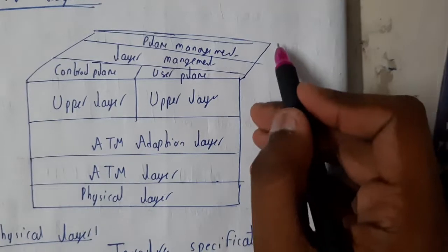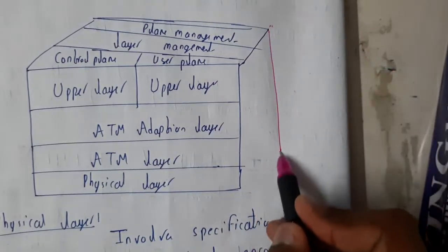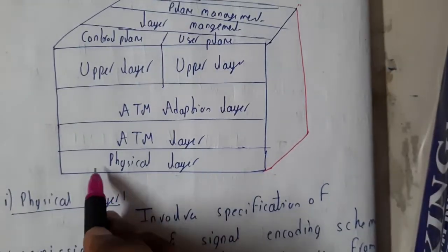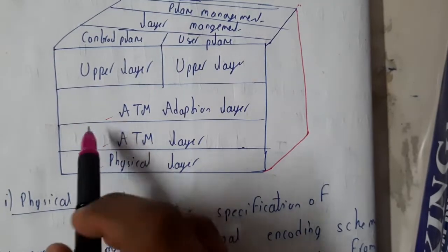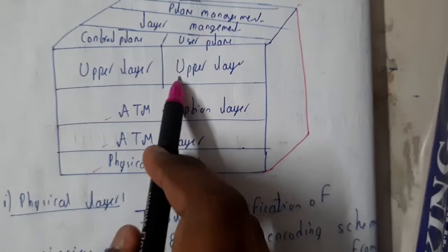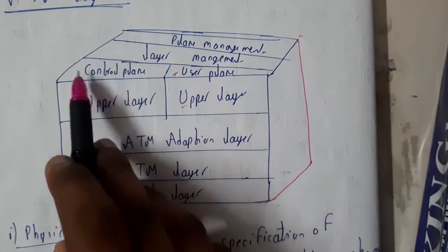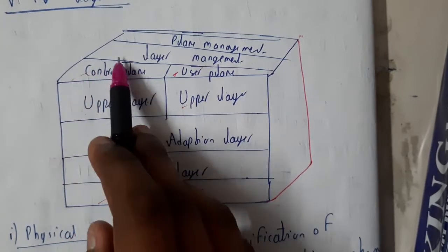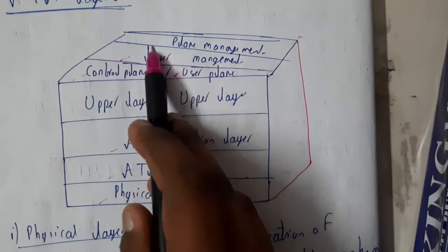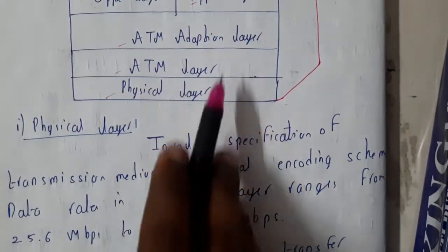Now let us go through the layers of ATM. This is a 3D diagram. It has a physical layer, ATM layer, ATM adapter layer, and upper layer. The upper layer also includes the user layer, control panel layer, and management and plane management.